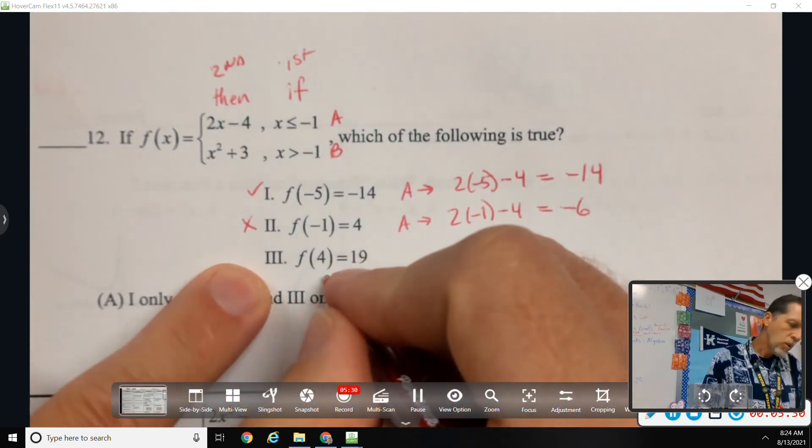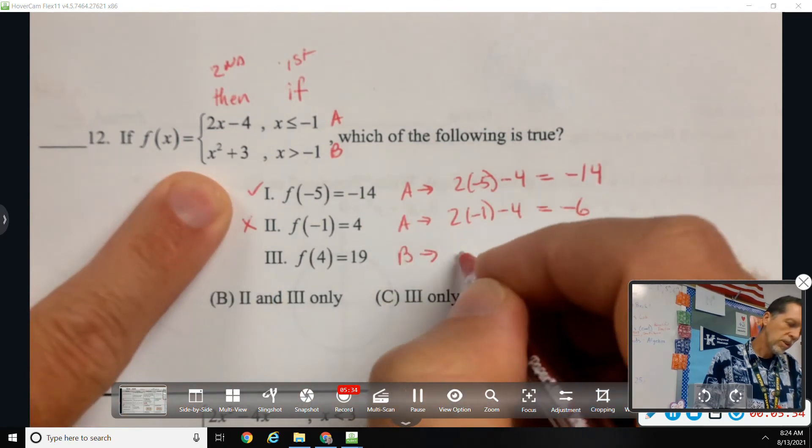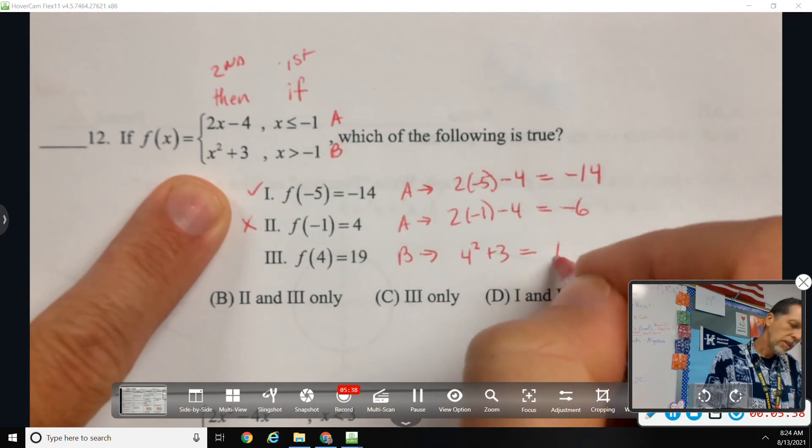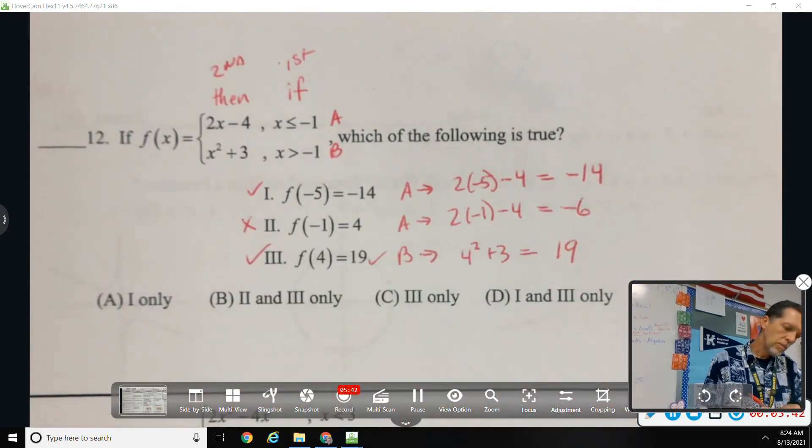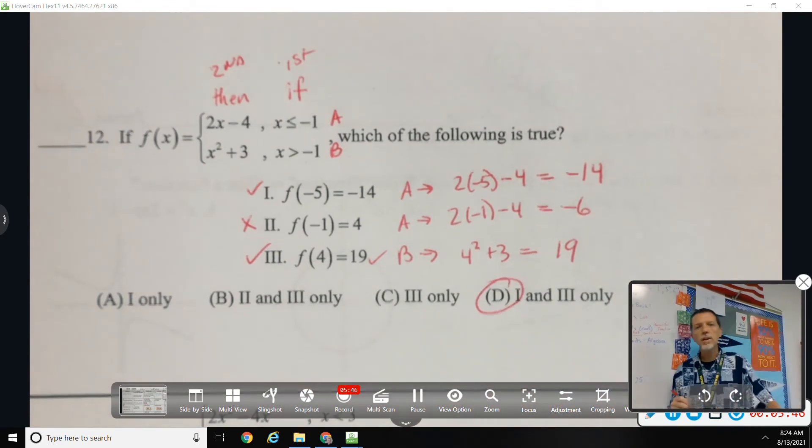And then f of 4, well 4 is bigger than negative 1, so I'll use branch b for this one. 4 squared plus 3, 16 plus 3 is 19, so yep that one's true. So I'm looking for 1 and 3, and that would be answer choice b. Yeah, we just worked three problems in one there.